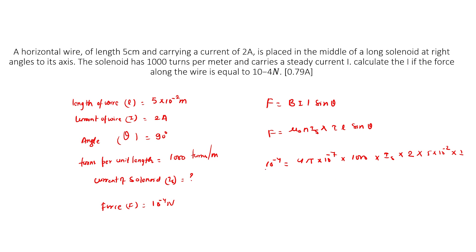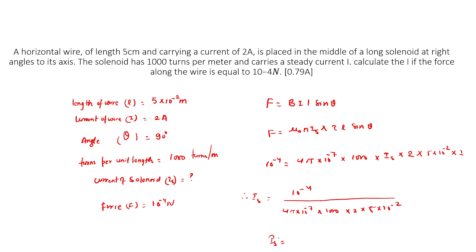Therefore, Is = 10⁻⁴ divided by (4π × 10⁻⁷ × 1000 × 2 × 5 × 10⁻²), which gives Is = 10⁻⁴ divided by 1.25 × 10⁻⁴, equals 0.8 Ampere.